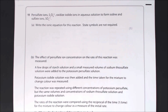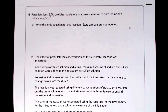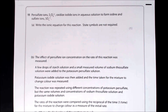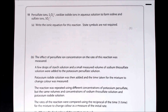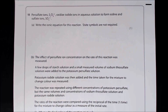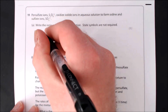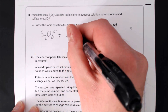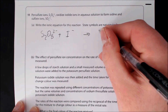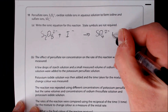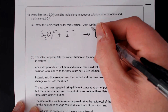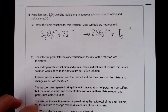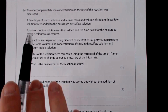Question eleven: persulfate ions S₂O₈²⁻ oxidise iodide ions to form iodine and sulfate ions. Write the ionic equation. Balancing gives: S₂O₈²⁻ + 2I⁻ → 2SO₄²⁻ + I₂. Two sulfates balance the two sulfurs; two iodides balance the I₂.